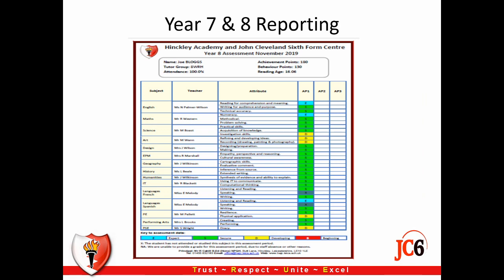The report structure now looks significantly different. Each of the 30 criteria run next to each of the departments and a colour coding system is used for expert, secure, developing or beginning. The idea is to create an accurate map of how well your child is doing for the place they are within the key stage. So for Year 7 at assessment point 2 — where are they for an 11 year old? How secure are their attributes, skills and essential knowledge as building blocks for Key Stage 4?